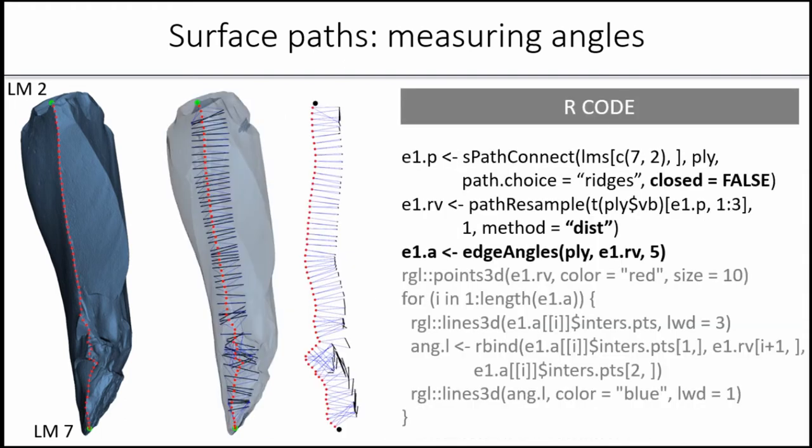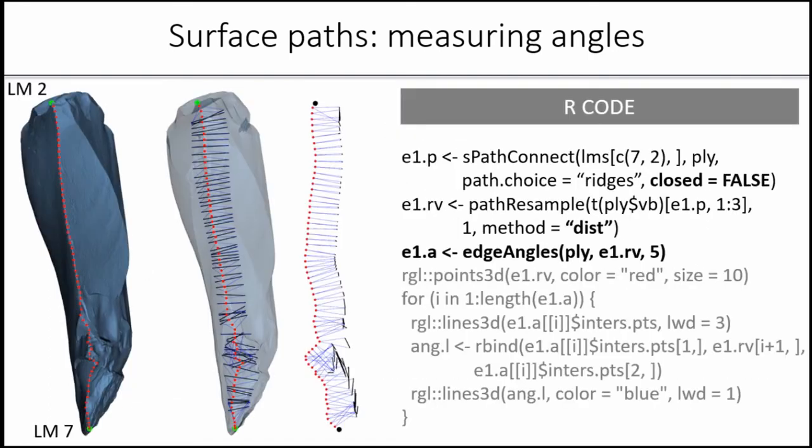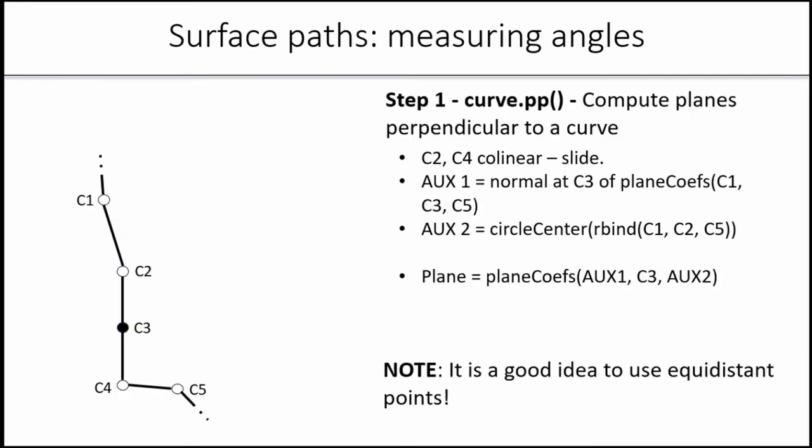How does this actually work? You connect these landmarks using the s-path connect function, then you resample the path with the distance option so they are located at a distance of one millimeter from each other, and then you request the angles at a distance of five millimeters. This code is simply doing this plot, which shows you where exactly things have been measured. Things are messy over here because the edge is messy there. These calculations are done fully in 3D, so it just follows the contour of the edge.